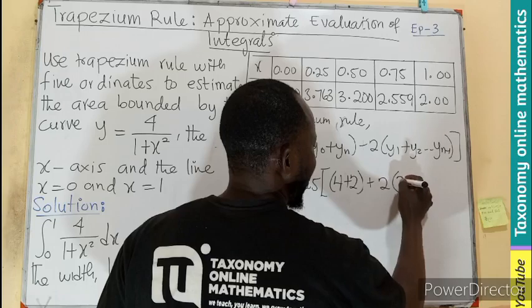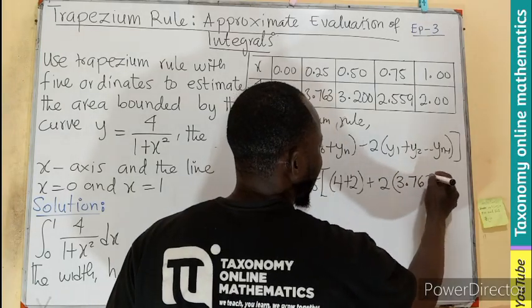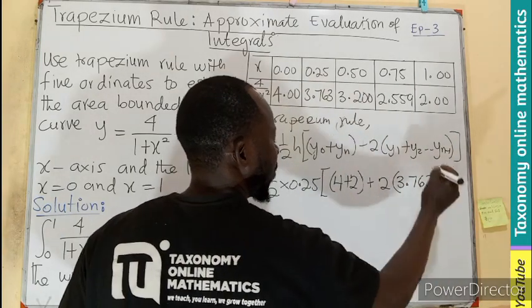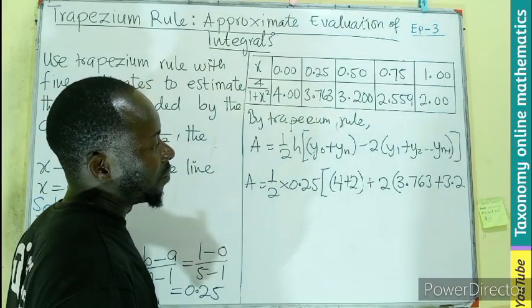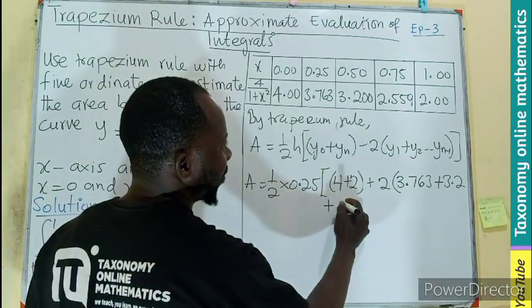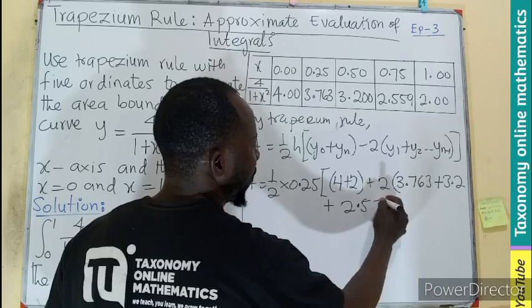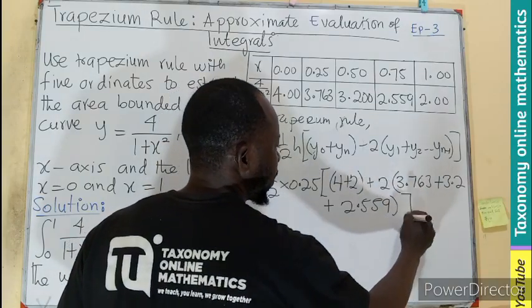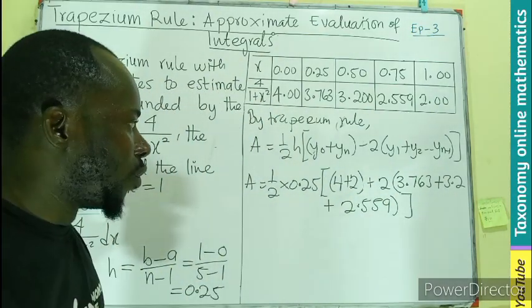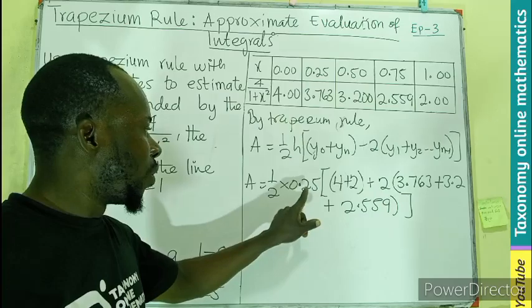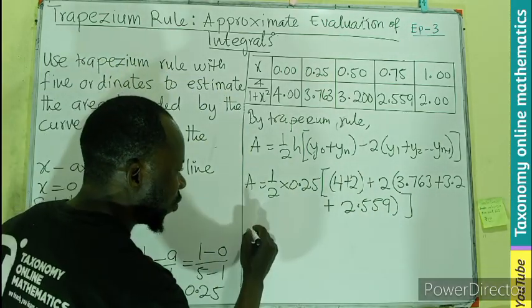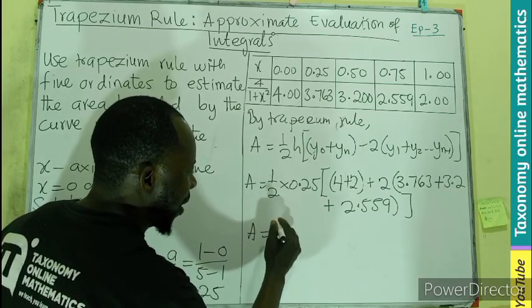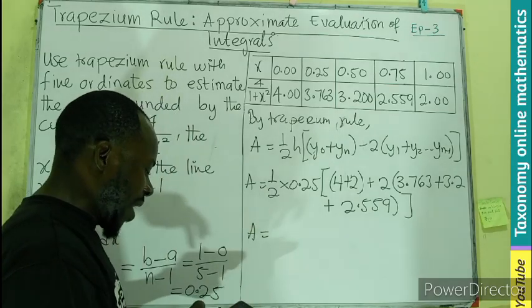Then we have 2 × (3.763 + 3.2 + 2.559). We add 4 and 2 to get 6, multiply the middle terms by 2, then add everything. So the calculation becomes 0.5 × 0.25